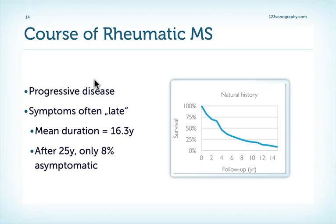What is the consequence of mitral stenosis, in particular rheumatic mitral stenosis? It's a chronic and progressive process, and we often see an increase in severity over time. We often see symptoms fairly late — the mean duration has been described as 16 to 3 point years for the occurrence of symptoms, and after 25 years only 8 percent are still asymptomatic. So even if the progression is not as quick as aortic stenosis, it eventually leads to problems.